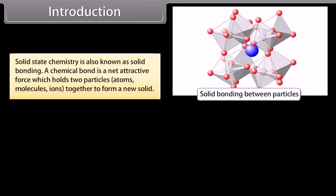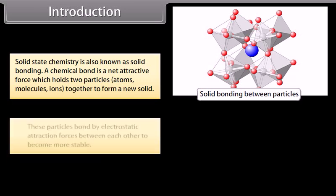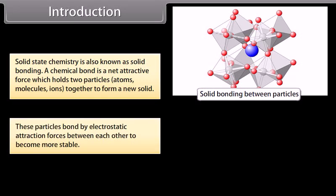Solid state chemistry is also known as solid bonding. A chemical bond is a net attractive force which holds two particles - atoms, molecules, or ions - together to form a new solid. These particles bond by electrostatic attraction forces between each other to become more stable.